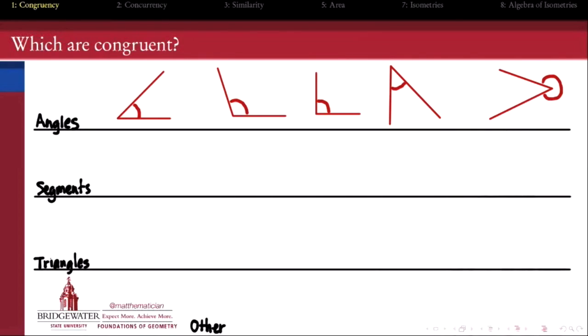If I have a whole collection of different angles, an angle being determined by where two line segments come together, then which of this set of angles are congruent? How do we determine whether two angles are, quote, the same?